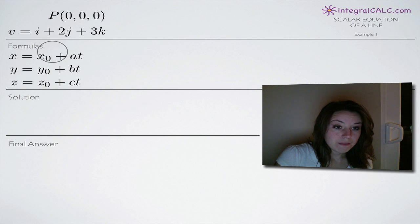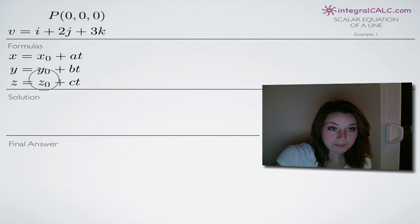And what our formulas tell us is that the point here, zero, zero, zero represents our three coordinates x sub zero, y sub zero and z sub zero. So we're just going to be plugging in zero for each of those there.